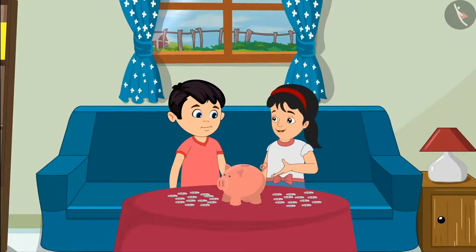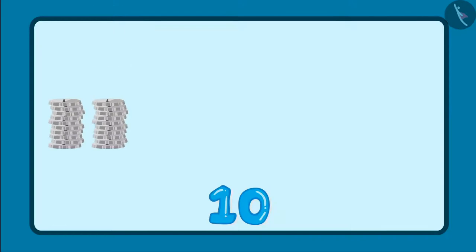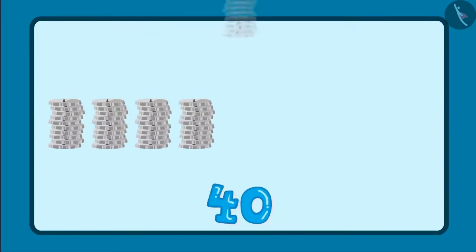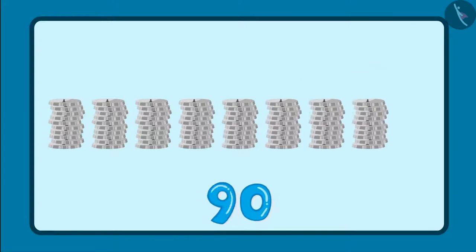Chotu, let's count all these coins by making groups of 10 each. So these are 10, 20, 30, 40, 50, 60, 70, 80 and 90.